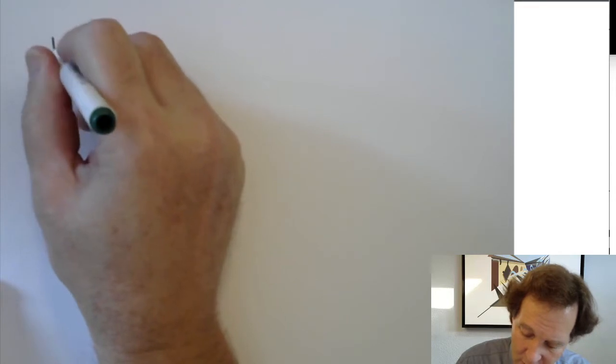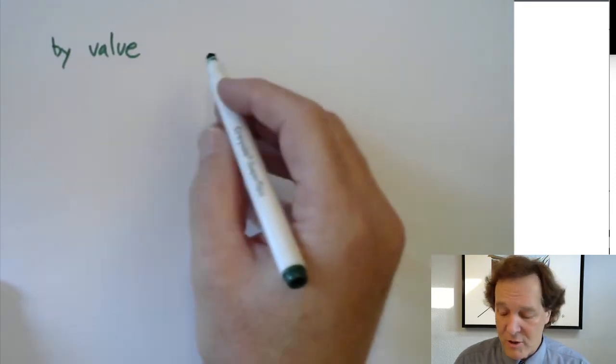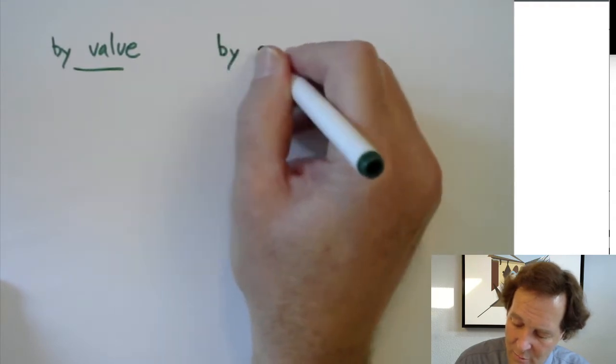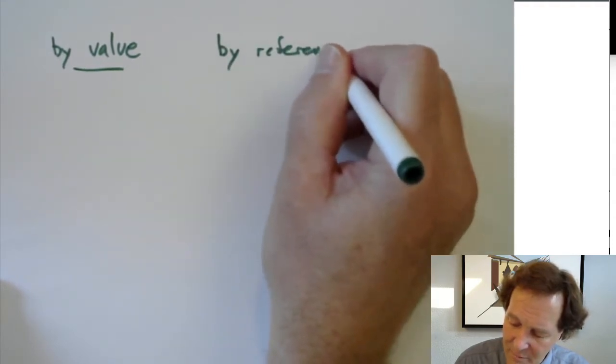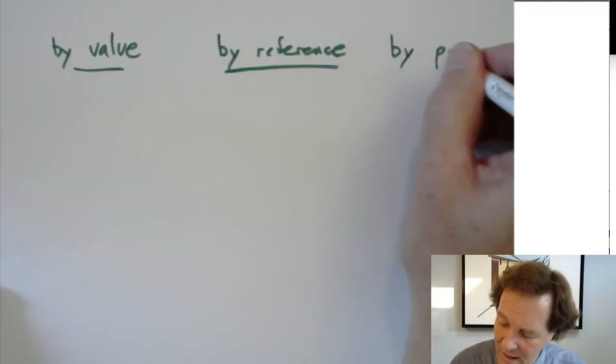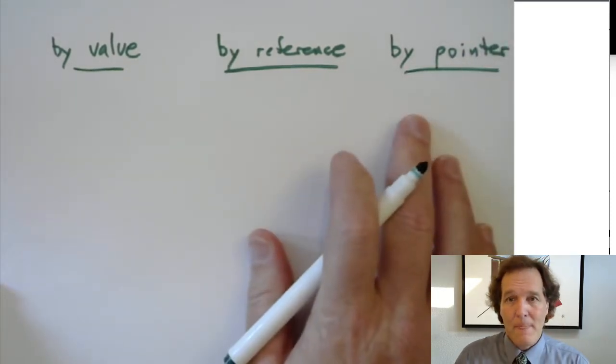The next topic is the call stack. When you call a function, how are the arguments passed? There are three ways: call by value — which is everything we've done so far in this course — call by reference, which is the most useful, and call by pointer, which is occasionally useful.